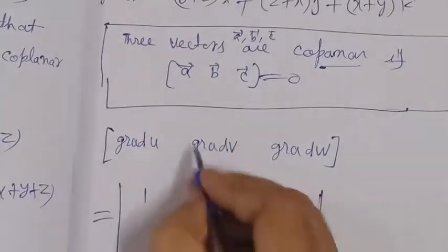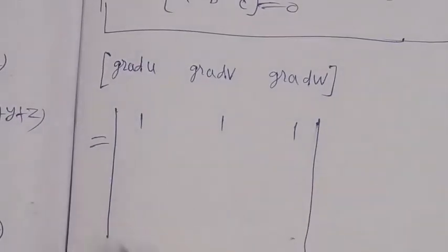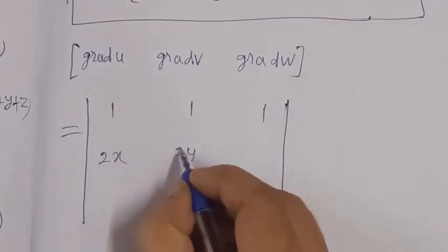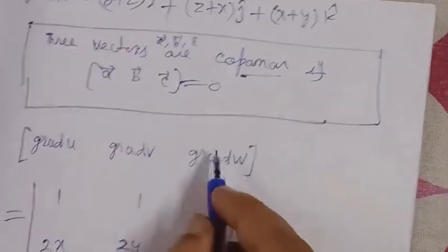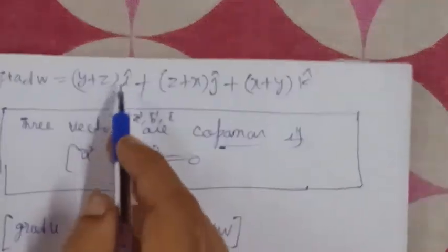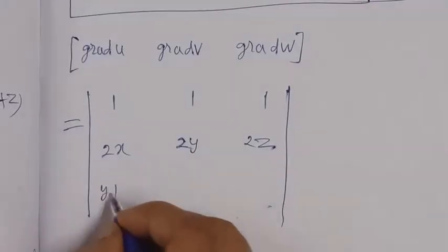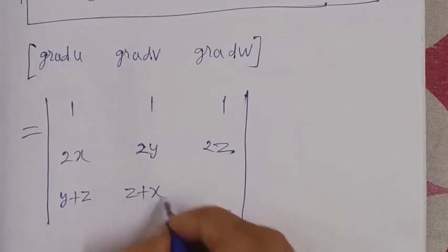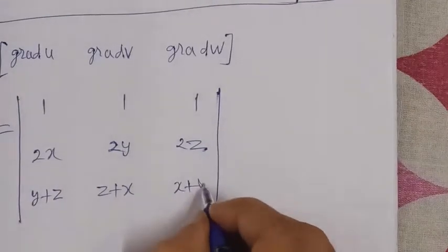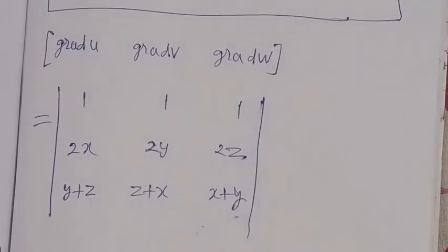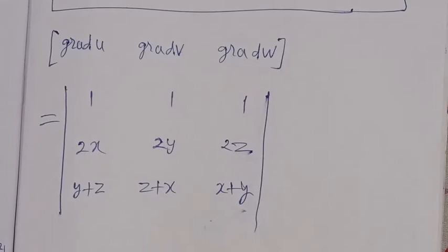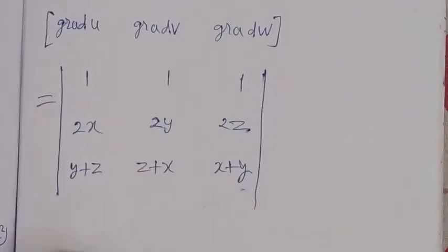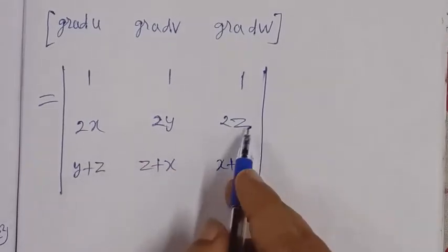The second row corresponds to grad v, whose i, j, k coefficients are 2x, 2y, 2z. The third row corresponds to grad w, whose i, j, k coefficients are (y+z), (z+x), (x+y). So our determinant is: Row 1: [1, 1, 1], Row 2: [2x, 2y, 2z], Row 3: [(y+z), (z+x), (x+y)]. If this determinant equals zero, the three vectors are coplanar.